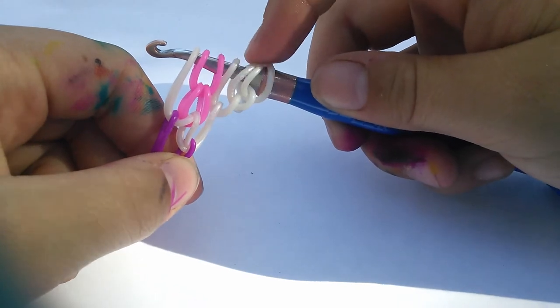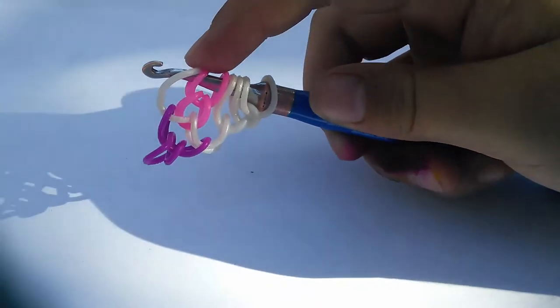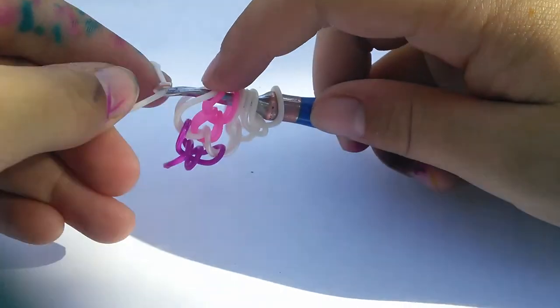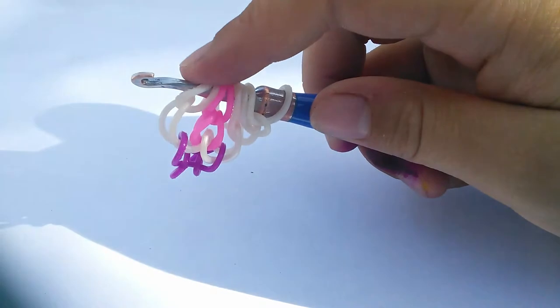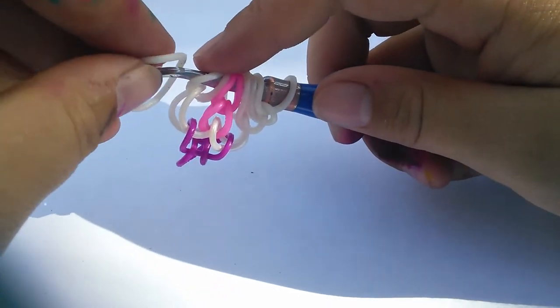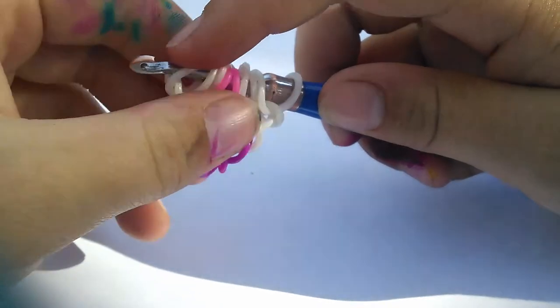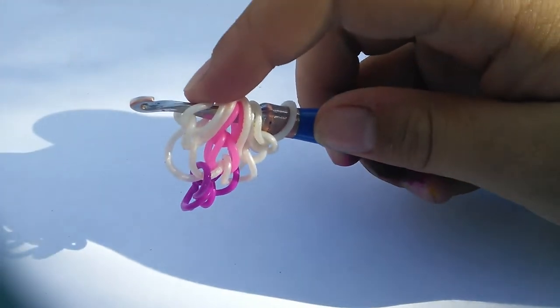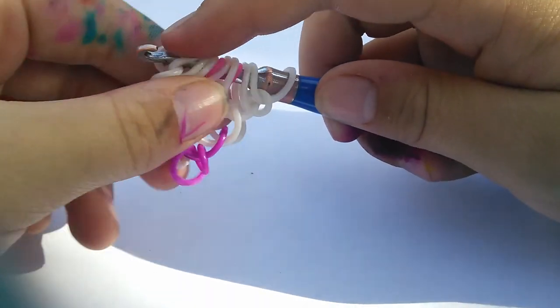So you should have this little wing part here. Two links in the middle, and then one band here. Now we're going to make the wing, so we're going to add three links on this side. One. Two. And three.